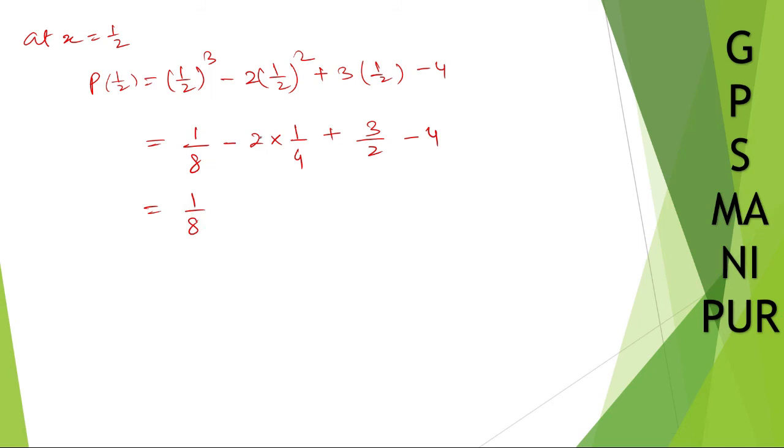So 1 by 8, 2 by 4, so minus 1 by 2, plus 3 by 2, minus 4. Now you're going to take the LCM. The LCM is 8. 8 divided by 8 is 1, 1 into 1 is 1. 2 divides into 8 is 4, 4 into 1 is 1. Plus 2 into 8 is 4, 4 into 3 is 12. Minus here is 1, 8 into 4 is 32. Minus 4 plus 1 is minus 3, plus 12 minus 32 will be minus 20. So minus 20 minus 3 is minus 23 by 8.